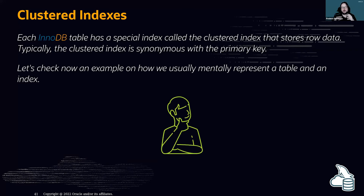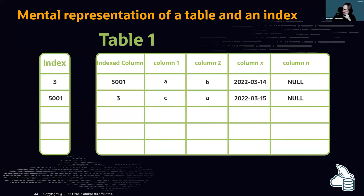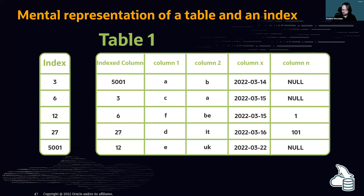Let's look at an example of how people mentally represent a table and an index. You have a table and an index next to it. When you insert a row with key 5001, it goes into the index sorted. Then you insert key 3, and the index gets re-sorted. This is how most people think it works — but in InnoDB, it's different.